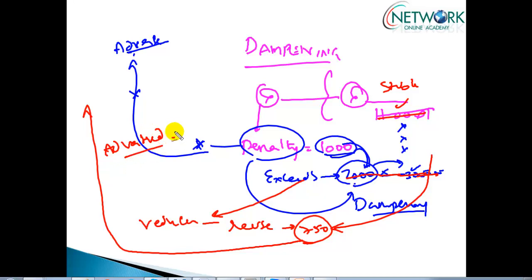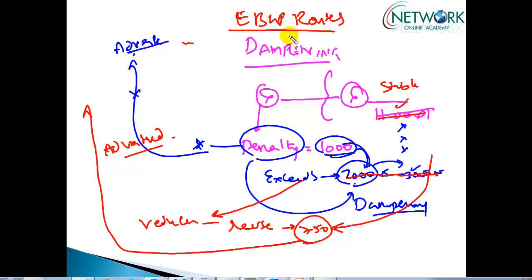The dampening feature is applied only to EBGP routes — routes learned from external BGP neighbors. It does not apply to routes learned from internal BGP neighbors. This is an important thing to keep in mind when practically verifying this feature.